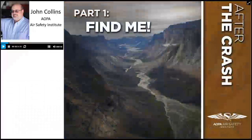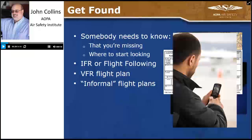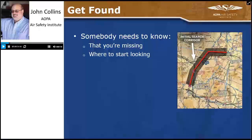The very first thing you want to do is make sure somebody can find you. If nobody knows where you went, or that you went anywhere at all, the odds of being found in a timely manner are very slim. There are cases in the record books where folks went off and nobody knew they were gone, and it took months or even years to find out what happened. If you're on an IFR flight plan or using VFR flight following and talking with air traffic control, if something goes awry you can let them know immediately and they have a good idea of where to begin looking for you.